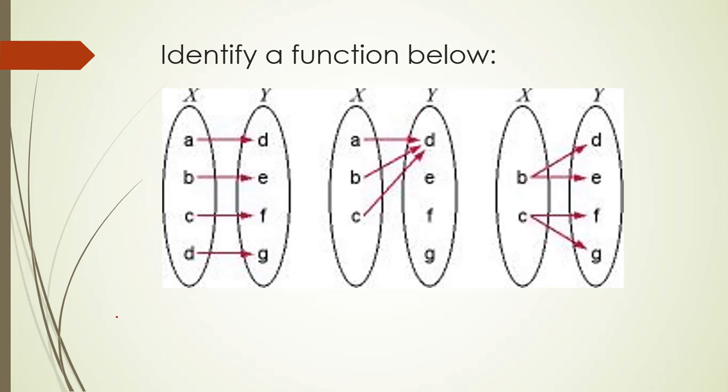So let's see. In the first one all the elements of set X have a definite image in set Y and all the images are different. So this verifies all the properties of a function.